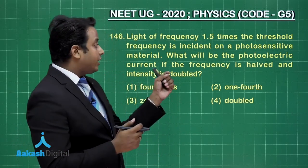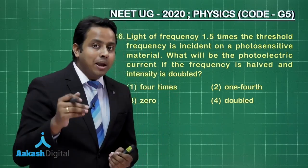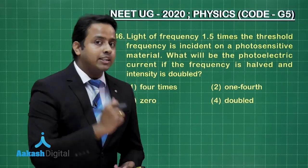You might be thinking that if intensity is doubled, photo current should also be doubled. But first of all, let me just check whether the photoelectrons will be ejected or not.